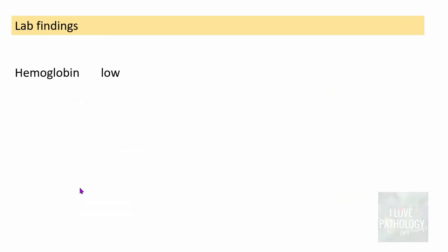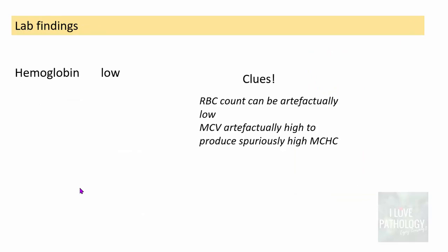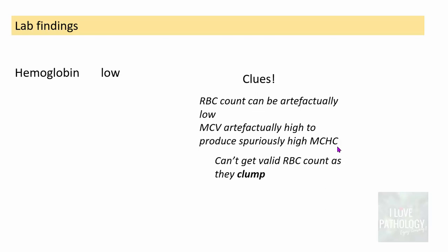Laboratory findings include low hemoglobin. When performing a complete blood count on an analyzer, the RBC count can be artifactually low and MCV artifactually high, resulting in spuriously high MCHC — because clumping due to antibodies prevents a valid RBC count. Many RBCs with antibodies clump together, making the RBC count unreliable.